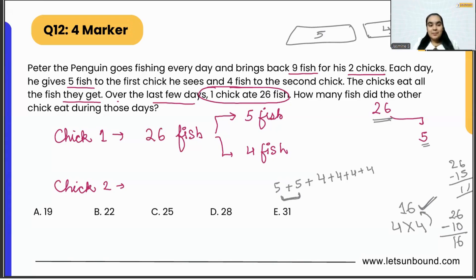That is how we can split 26 into the pair of five, five, four, four, four, four. So five, five, four, four, four, four. In total we had how many days? Six days. Now to find out how many fishes the second chick ate.